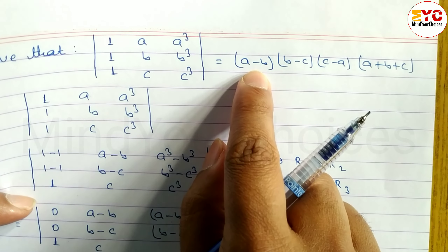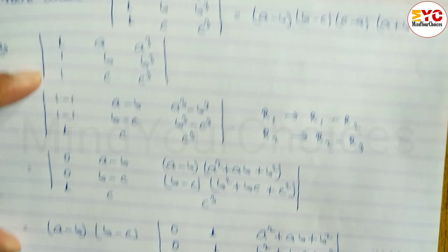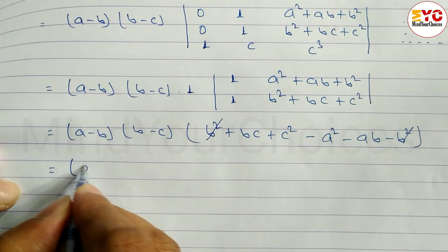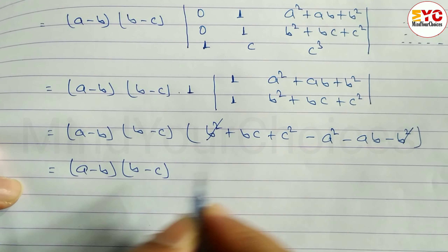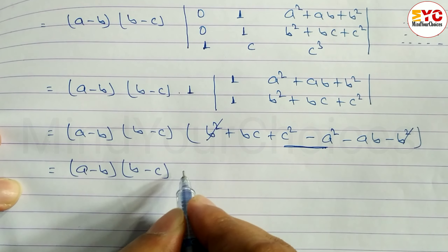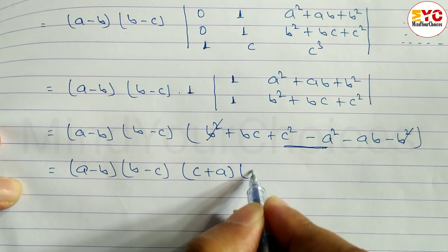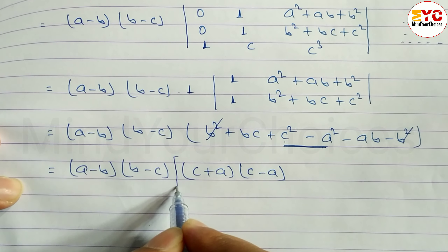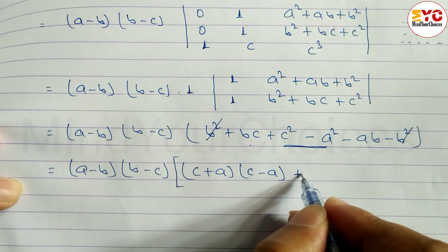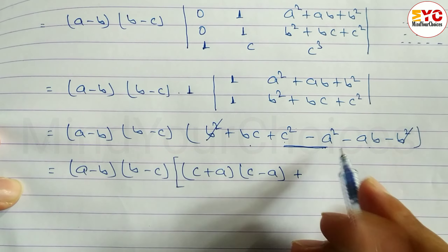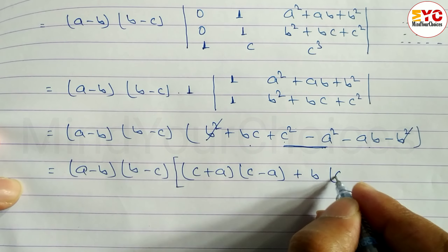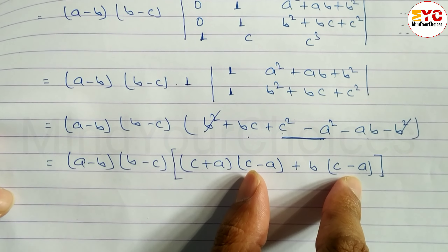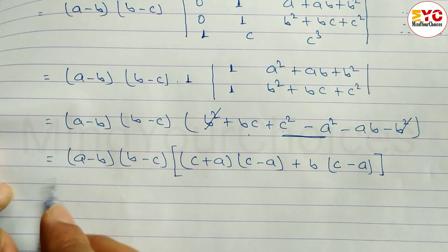For c² - a², use the formula: c² - a² = (c+a)(c-a). We already have (a-b) and (b-c) outside. Now we can take (c-a) common. So we write (a-b)(b-c)(c-a) common, with the remaining factor being (c+a), which we can also write as (a+b+c) after collecting remaining terms.